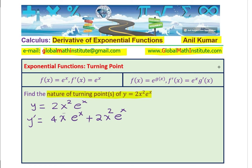The idea is to find the turning points, so we factor the derivative. We can see that 2x e to the power of x is common, leaving us with 2 plus x. So the factored derivative is 2x e to the power of x times (2 plus x).